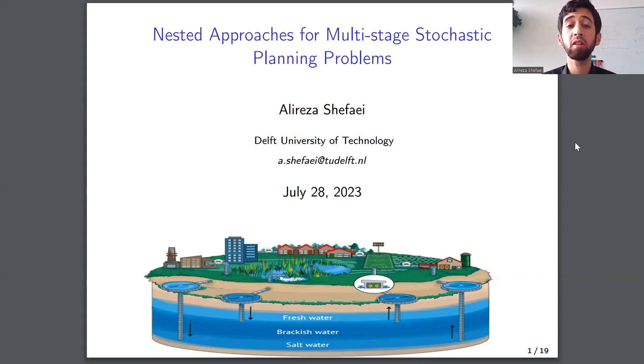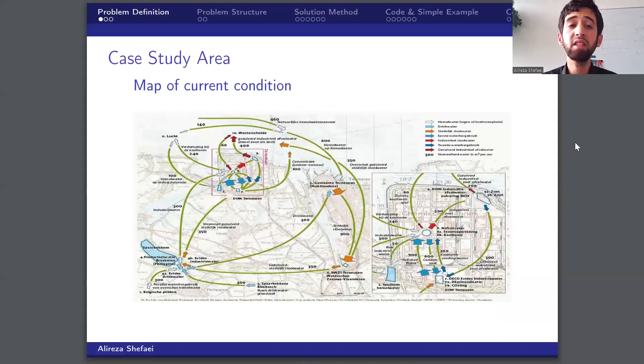I'm working on robust long-term planning of water supply networks under uncertainty. The main study area in my project is a region in the southwest of the Netherlands. You can see its current status on this map.